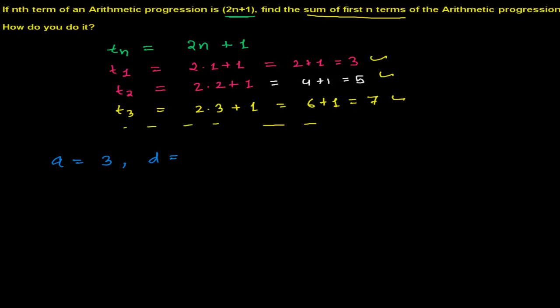And my common difference d equals to, generally the difference of any two consecutive numbers. So here if the first term is 3 and second term is 5, or second term is 5 and third term is 7, so easily I can calculate my common difference will be 7 minus 5, you can do 5 minus 3, anything you can do, that is 2 here.